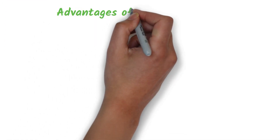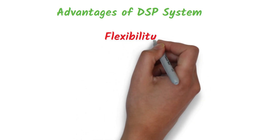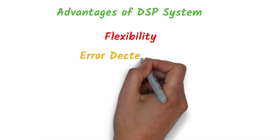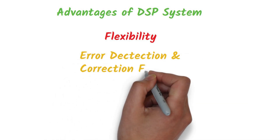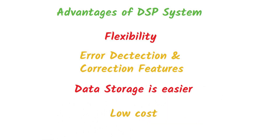The main advantages of digital signal processing include simplicity compared to analog signal processing, flexibility as processing can be easily modified with simple changes in software, access to error detection and correction features, and easy data storage and transport with digital storage devices.